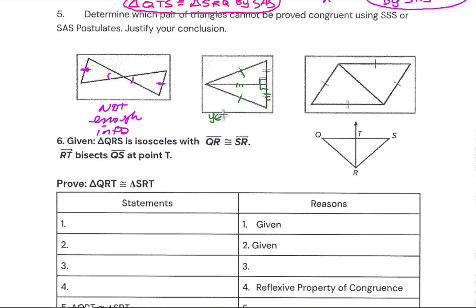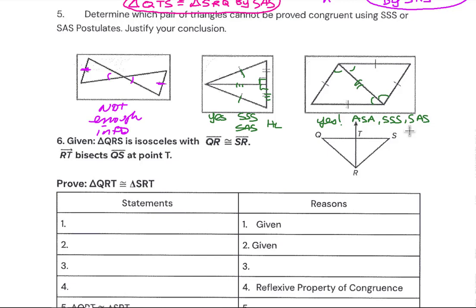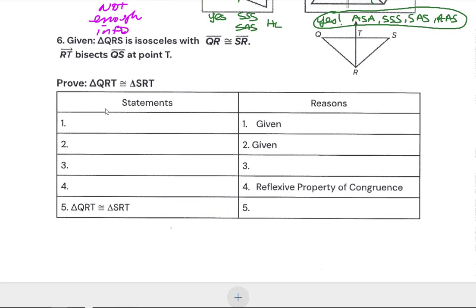Looking at the isosceles triangle, we've got the altitude, which is congruent to itself by reflexive, and the two legs of the isosceles triangle. Those other sides are congruent, so we have our choice of Side-Side-Side or Side-Angle-Side. In the parallelogram, opposite sides are congruent, giving us Side-Side-Side. Using parallel lines with alternate interior angles, we have multiple choices: Angle-Side-Angle, Side-Side-Side, Side-Angle-Side, or Angle-Angle-Side.